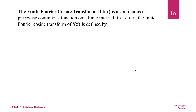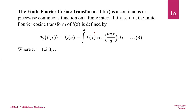Similarly, we define the cosine transform. The finite Fourier cosine transform of f(x), which is a continuous function on the interval 0 to a, is denoted by f̃_c(n) and defined as the integral from 0 to a of f(x) cos(nπx/a) dx, where n equals 1, 2, 3, and so on.